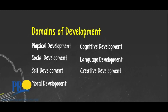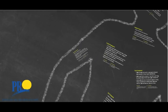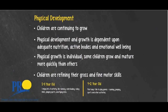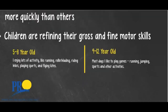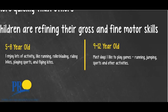Let's dive into physical development. Children are continuing to grow, and physical development and growth is dependent upon adequate nutrition, active bodies, and emotional well-being. Physical growth is individual — some children grow and mature more quickly than others. Children are refining their gross and fine motor skills, and they need time to practice, make mistakes in a safe environment, try new things, and challenge themselves. Here's an example of physical development for a child who's 5 to 8 years old versus a child that's 9 to 12 years old.